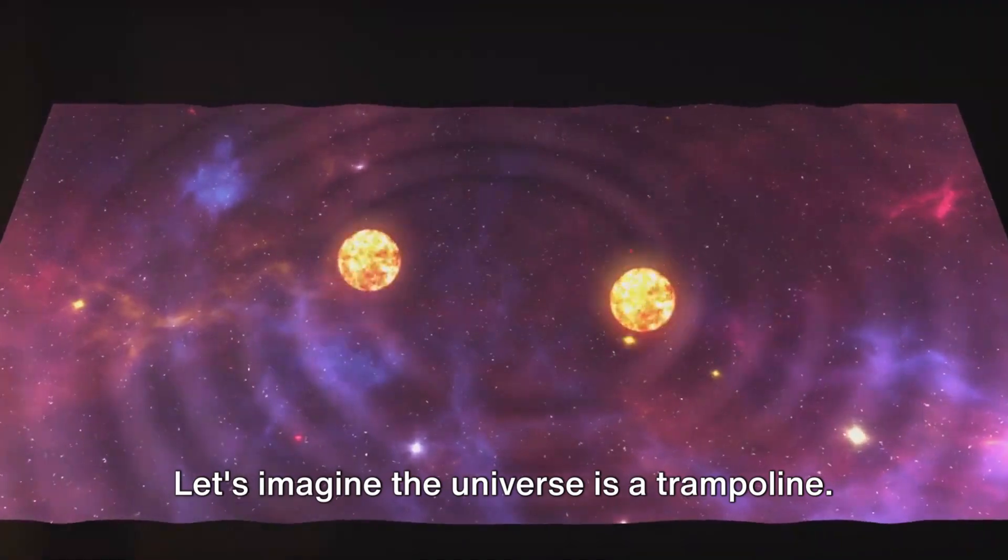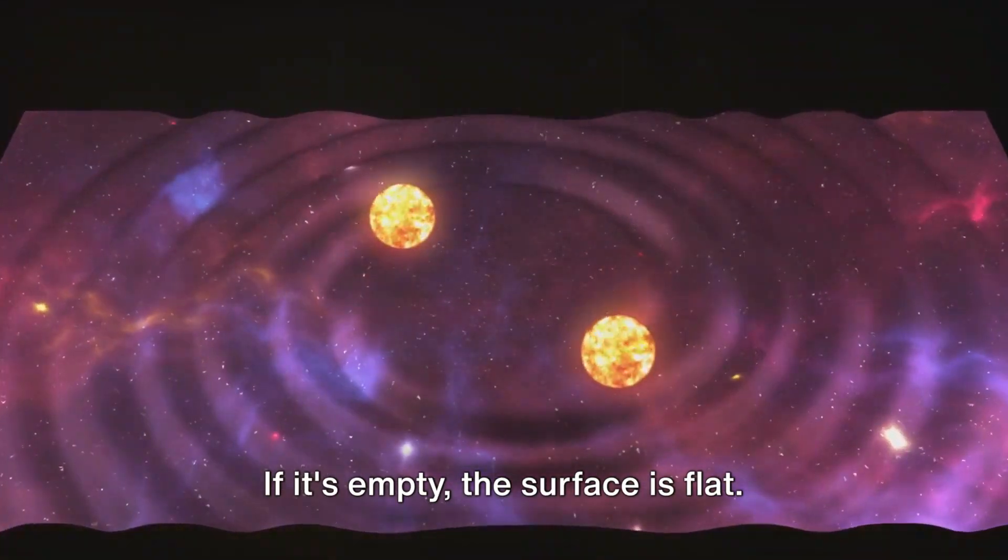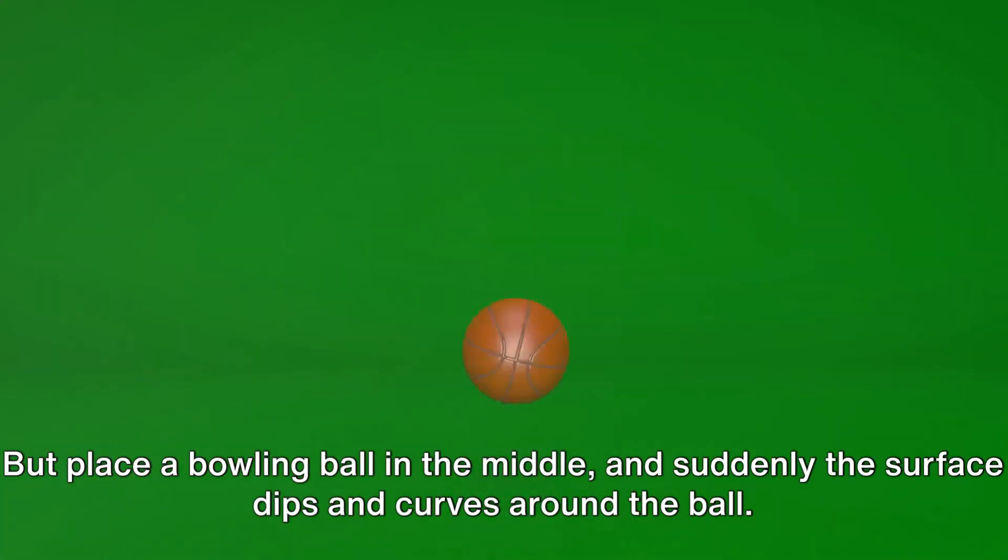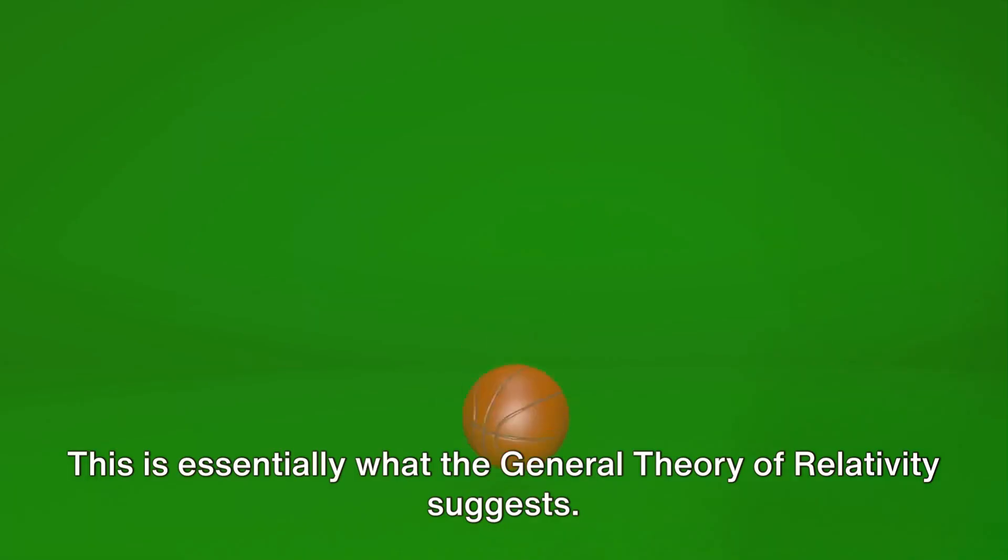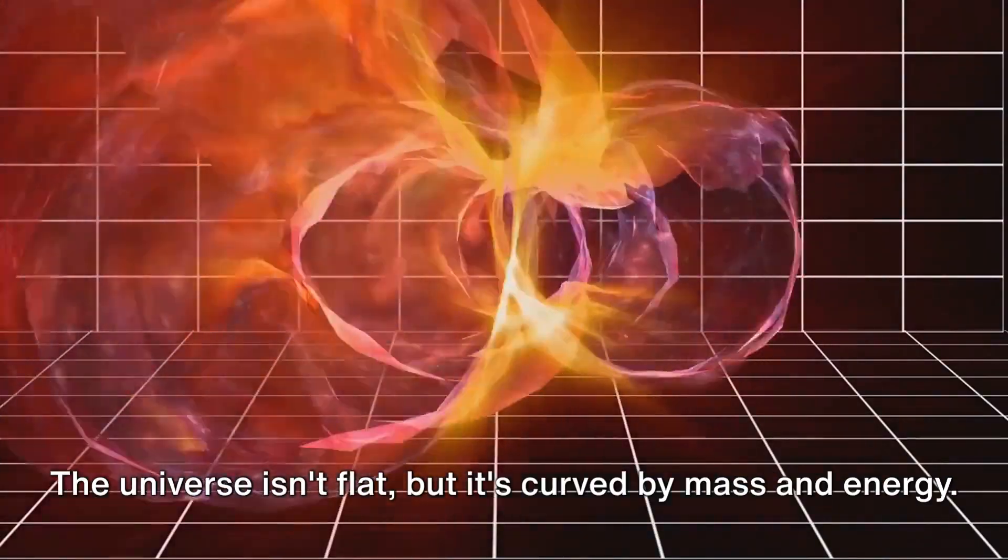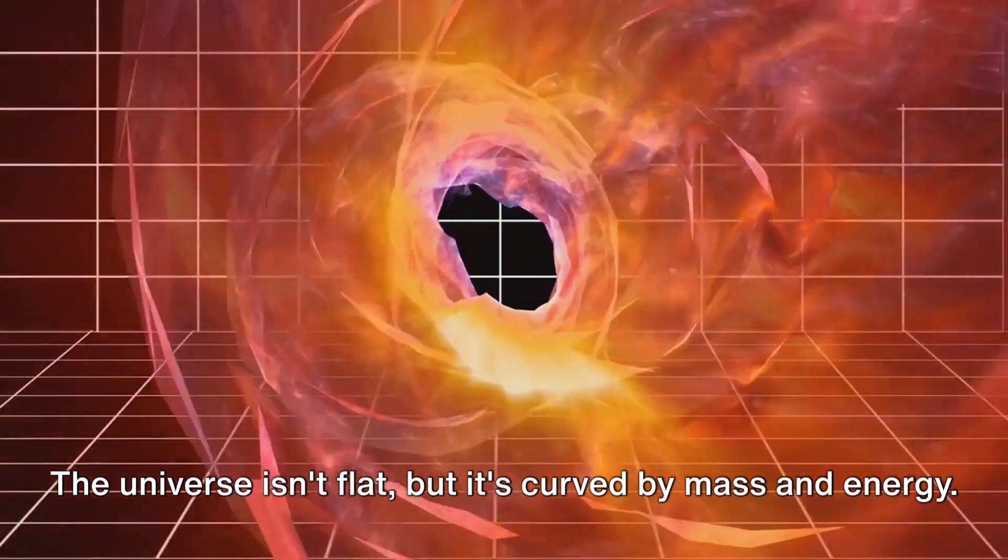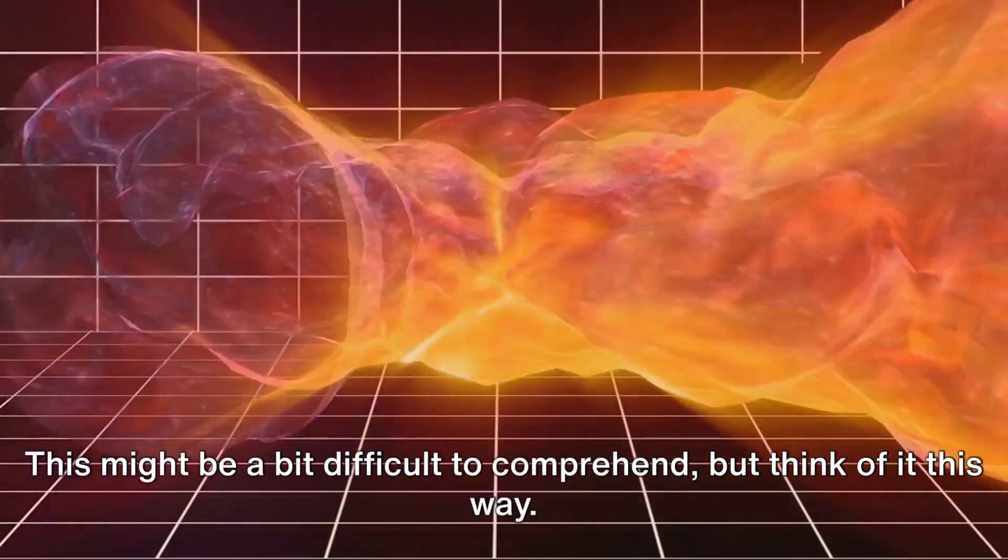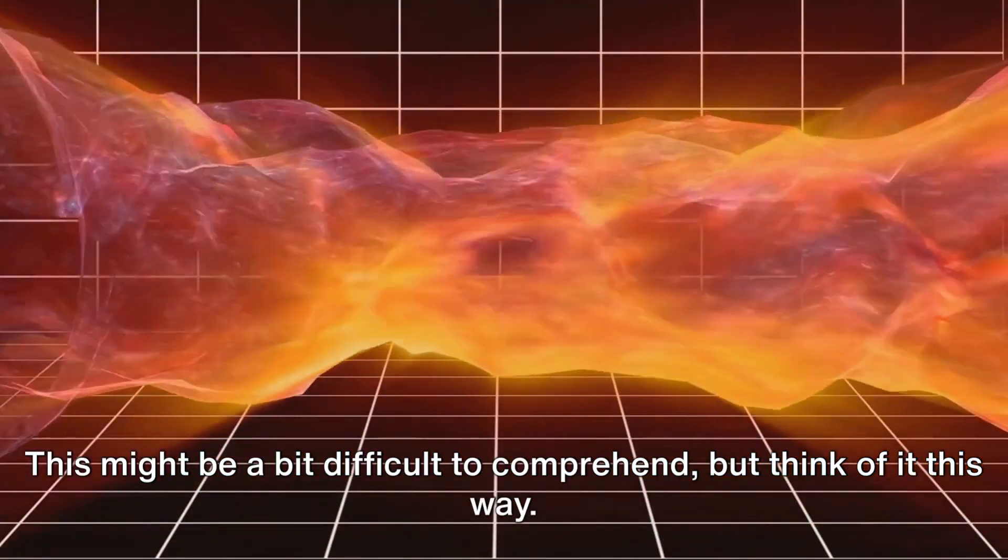Let's imagine the universe as a trampoline. If it's empty, the surface is flat. But place a bowling ball in the middle, and suddenly the surface dips and curves around the ball. This is essentially what the General Theory of Relativity suggests. The universe isn't flat, but it's curved by mass and energy. This might be a bit difficult to comprehend, but think of it this way.